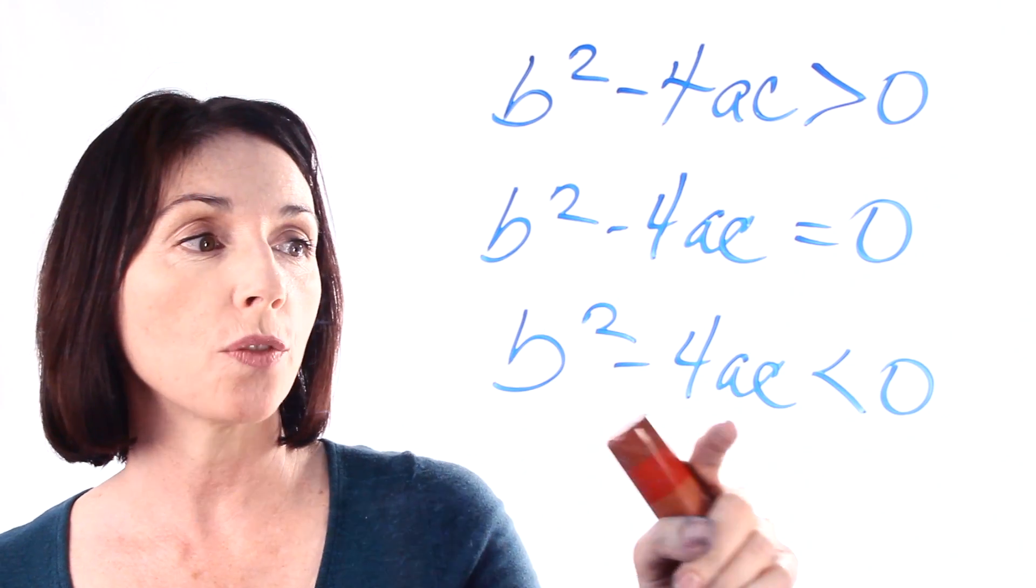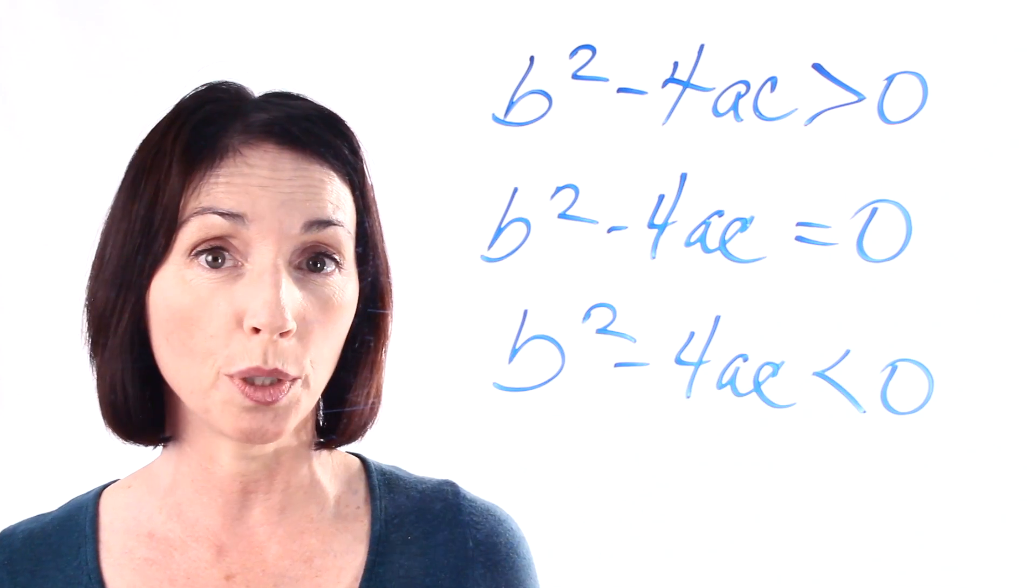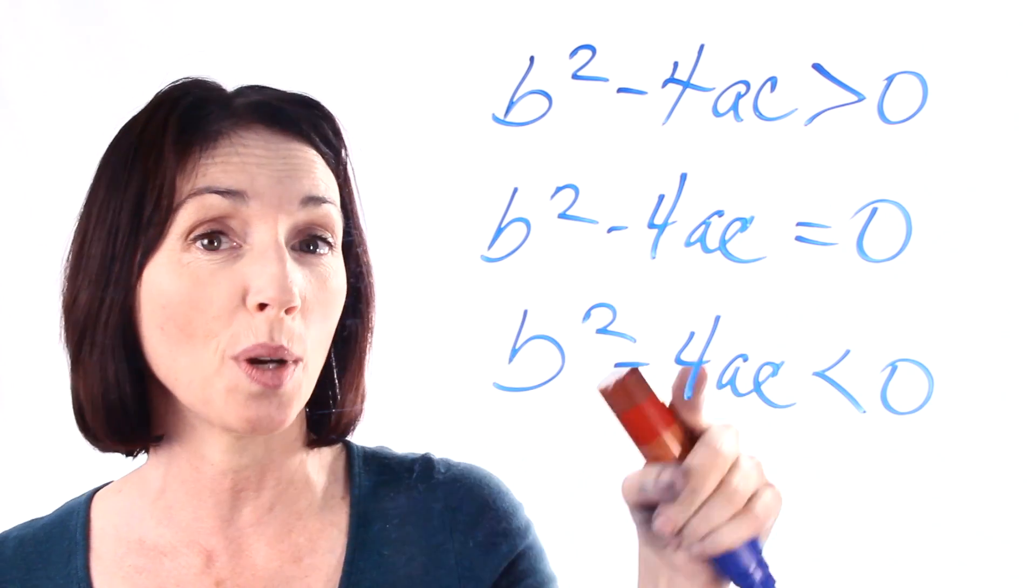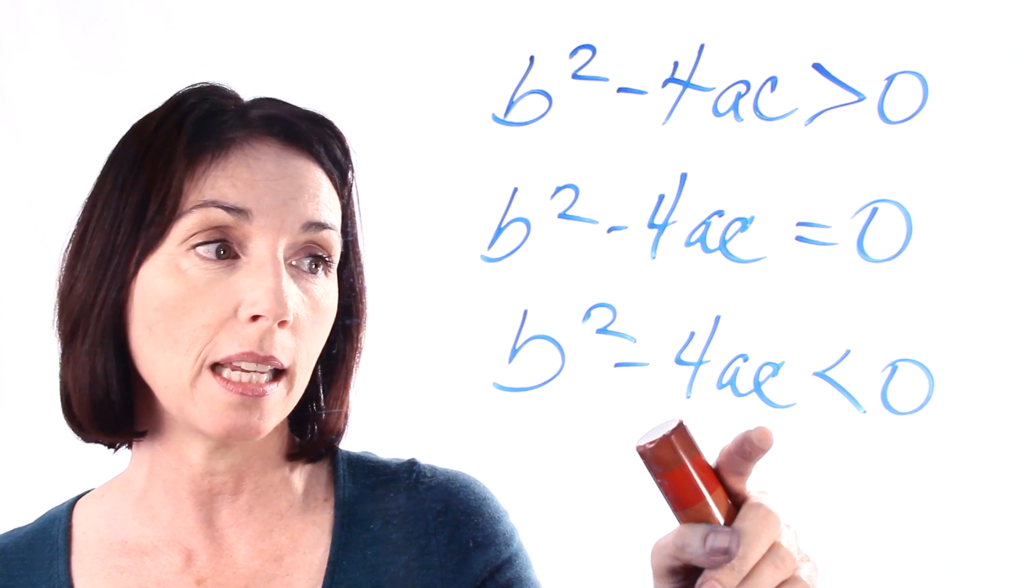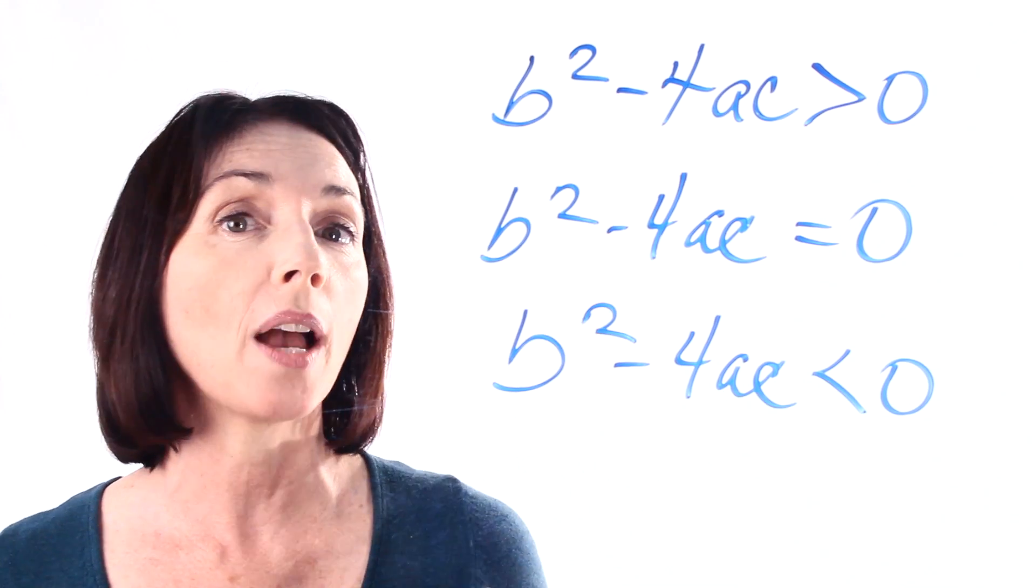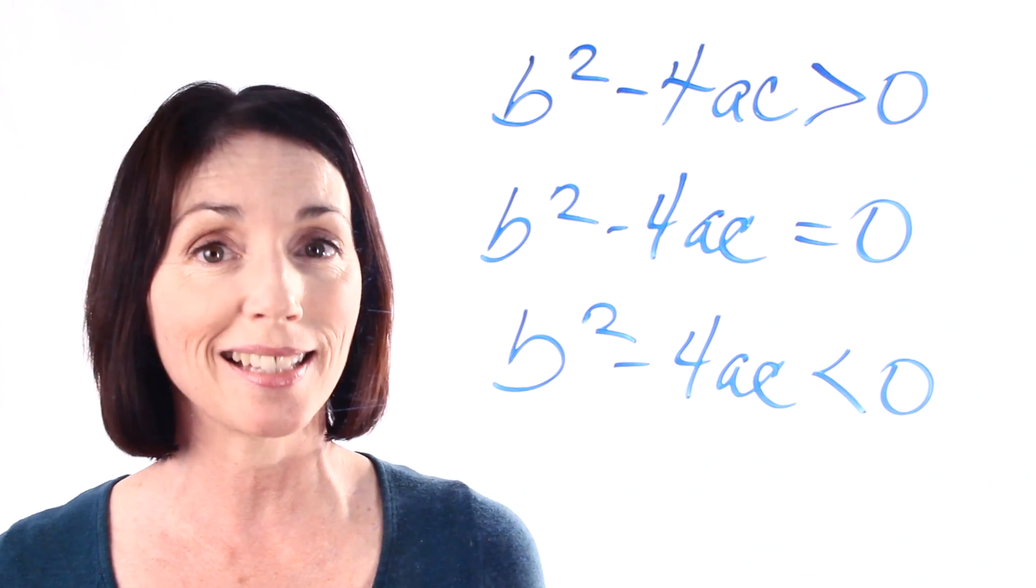And if b squared minus 4ac is less than zero, it means that you have no real roots because don't forget you're trying to take the square root of this in the formula. So b squared minus 4ac being less than zero means that you have no real roots, or in other words, no solutions in the set of real numbers.